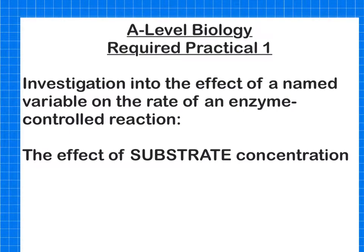Hi everyone, this video covers the part of the A-level biology required practical 1 which talks about investigating the effect of a named variable on the rate of enzyme controlled reactions. Those named variables could be temperature, pH, and in this case is the effect of substrate concentration.